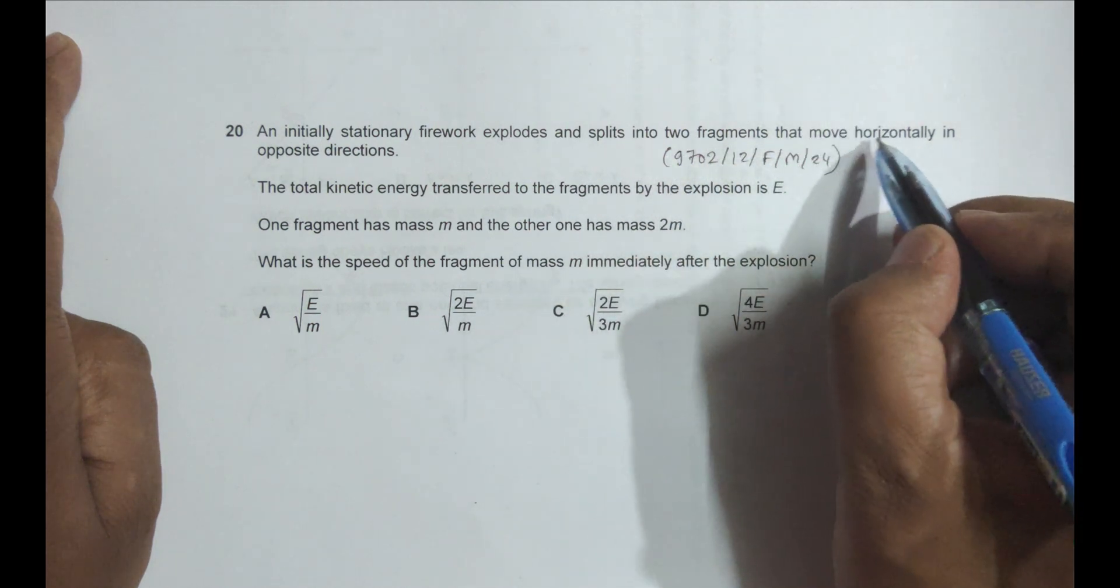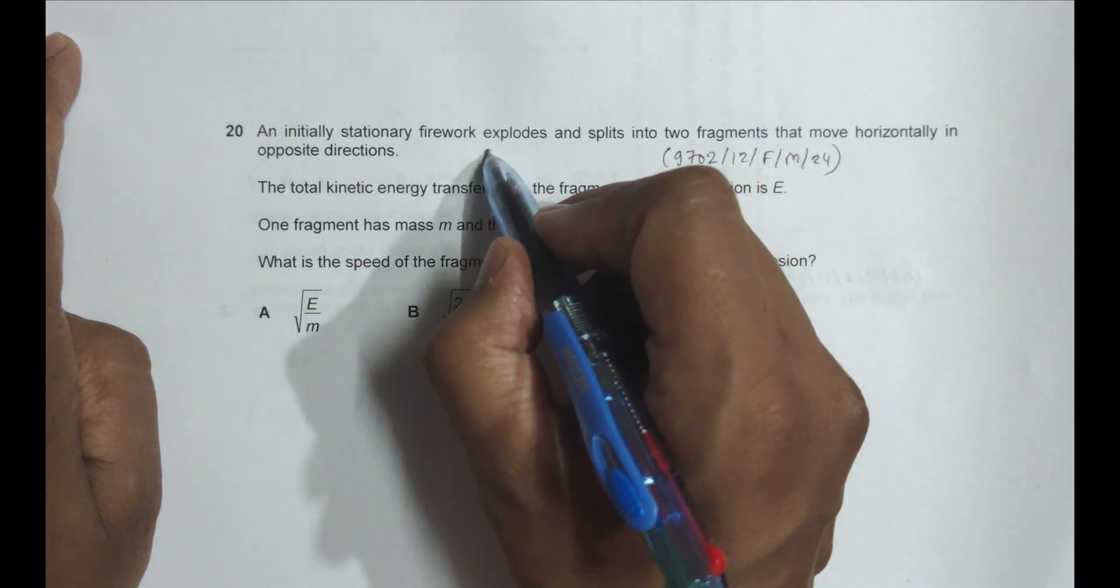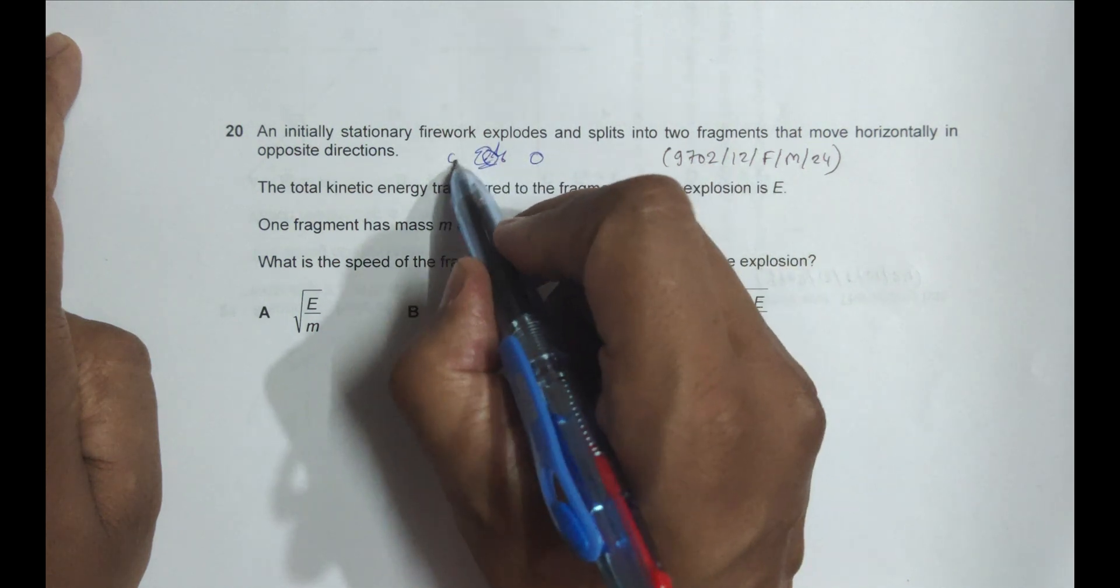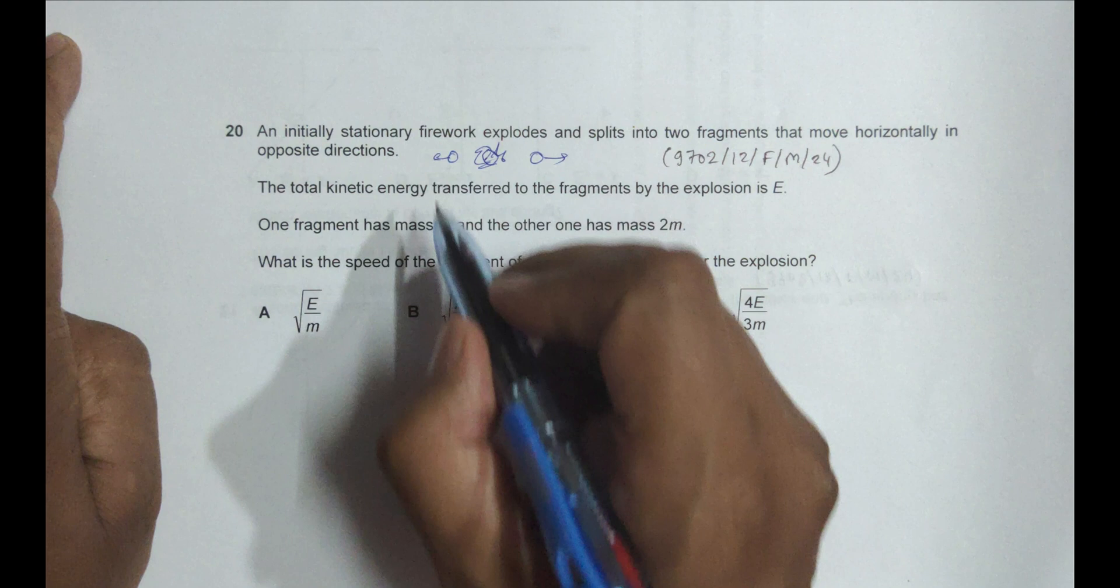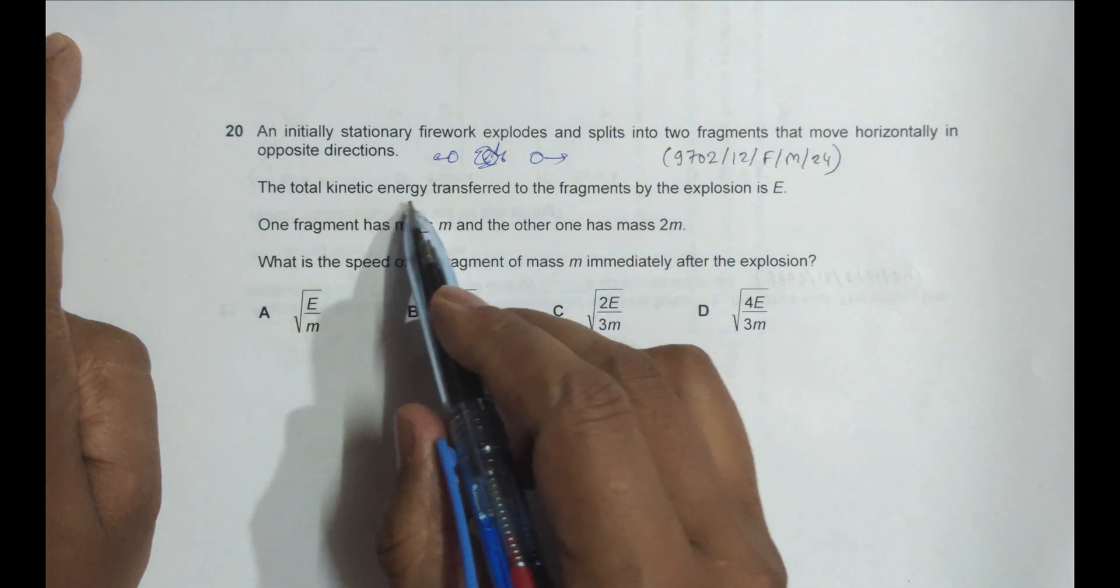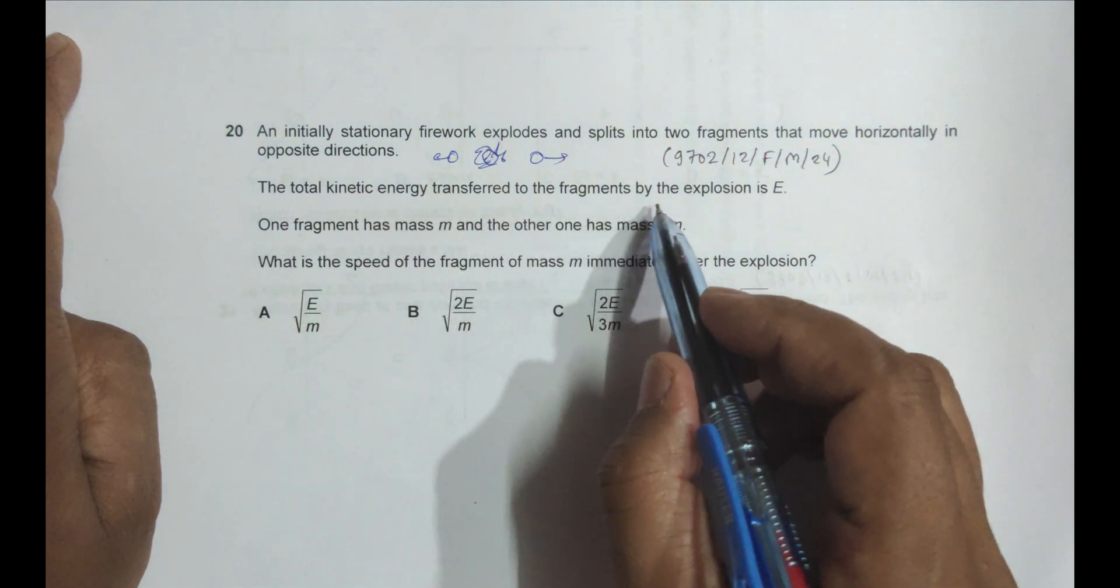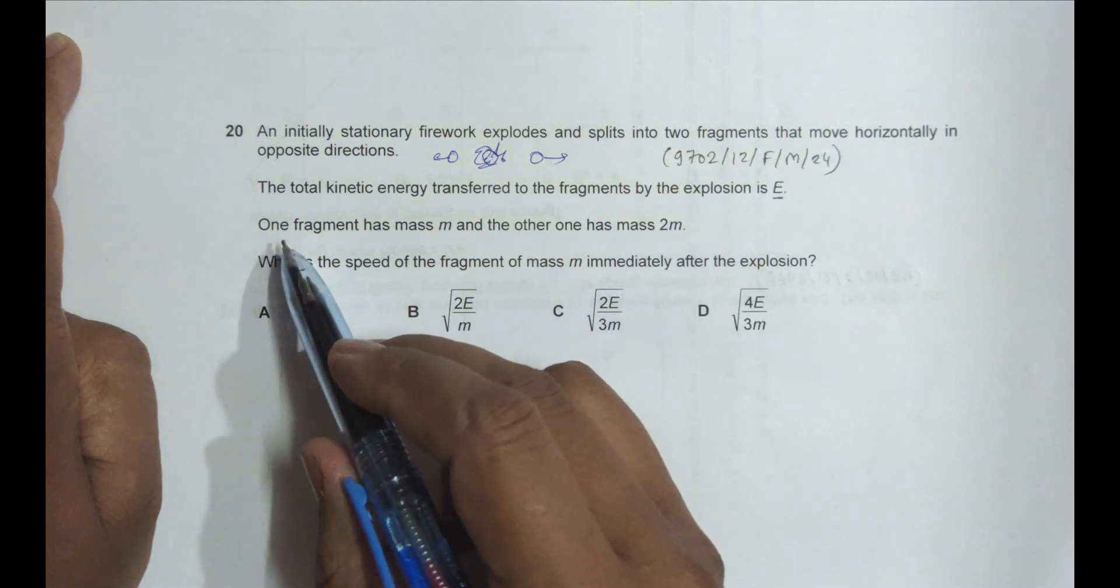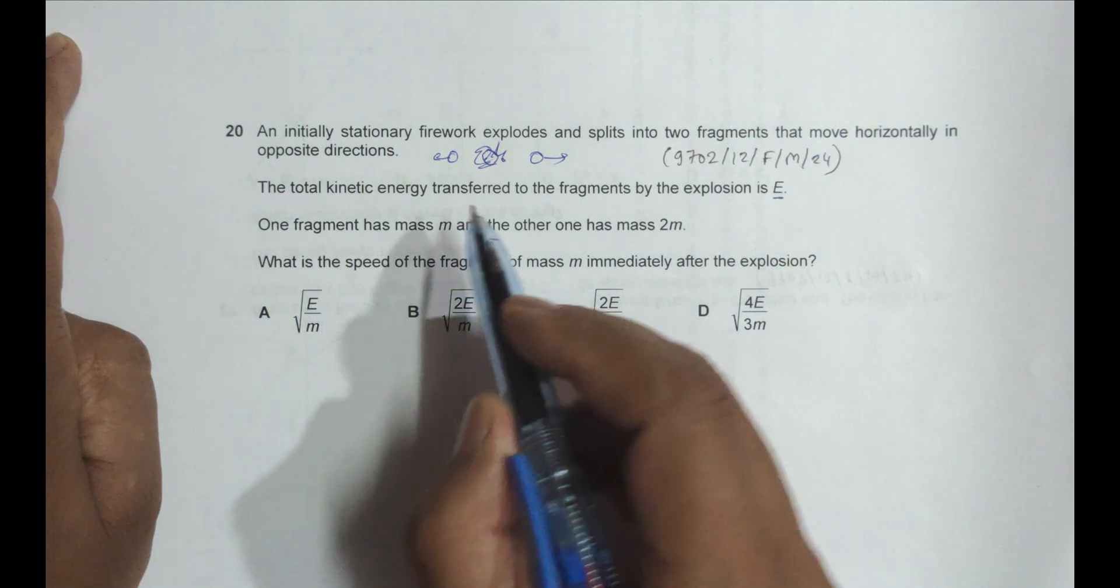The fragments move horizontally in opposite directions. If it explodes here, there are two pieces moving - one to this direction and one to this direction. The total kinetic energy transferred to the fragments by the explosion is E.